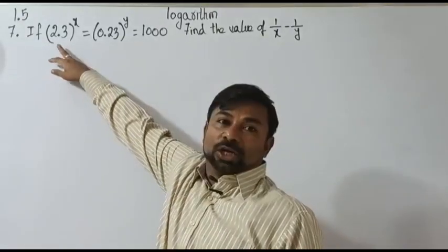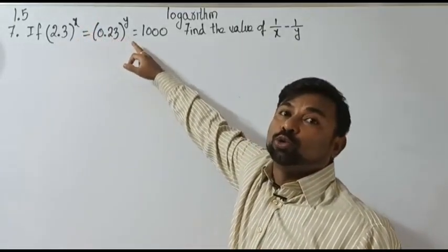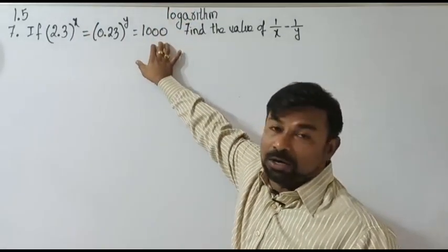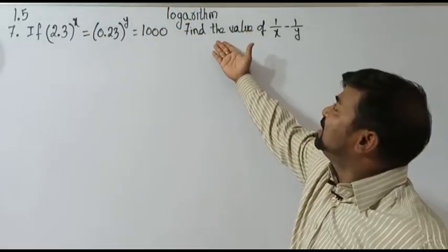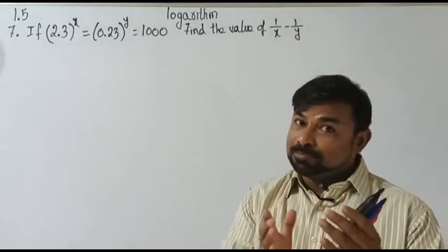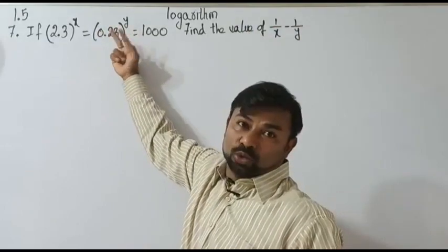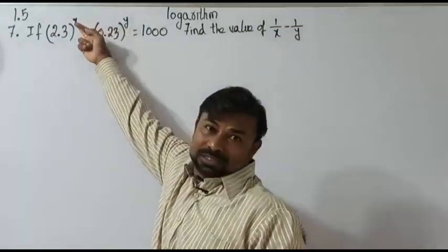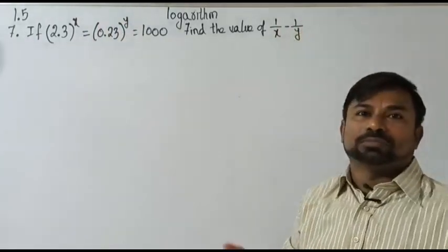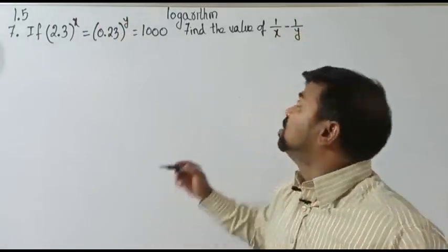Here he has given: 2.3 whole to the power x is equal to 0.23 whole to the power y, equals 1000. And what he wants is: find the value of 1 by x minus 1 by y. We are having two variables, and he wants the value as 1 by x minus 1 by y.